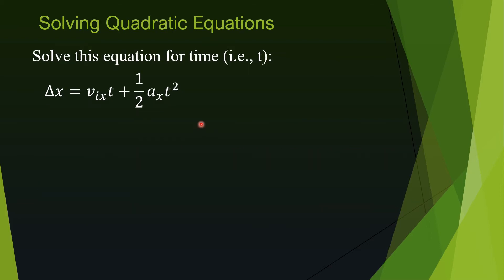Now let's look at another example. This question asks us to solve for t. But t appears in both terms on the right side. It is not simply t but t squared on the second term. This equation is quadratic in t.